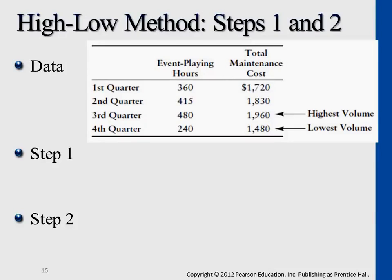Step one: figure out the slope, which is $2, based on picking the highest and lowest points. The differences between x-axis and y-axis give us $2. Then plug it into any data points to get total variable cost, and subtract from total cost to figure out the fixed portion. Then put it all together into an equation.